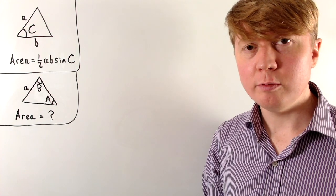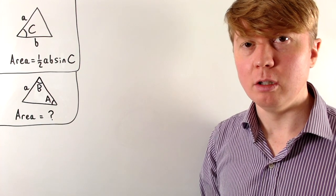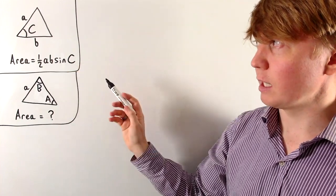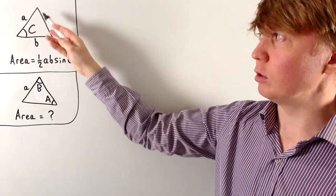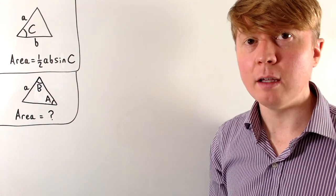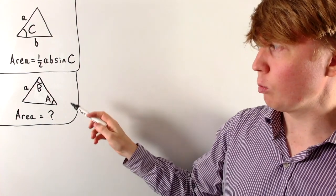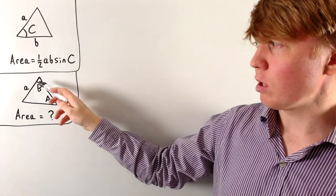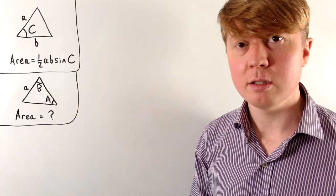We're going to look at some different formulae for the area of a triangle. In contrast to the classic one — a half AB sine C, where C is the angle enclosed between the sides of length A and B — we'll first look at the scenario where you have two angles, capital A and B, and a side not enclosed between those two angles.